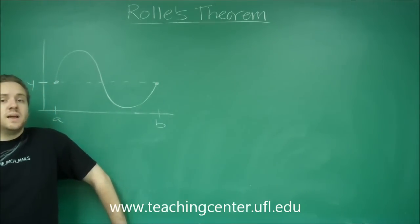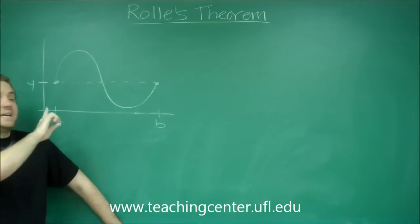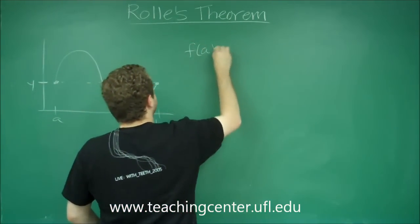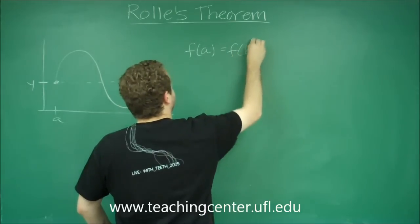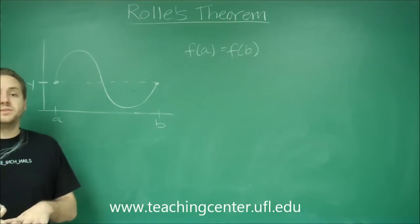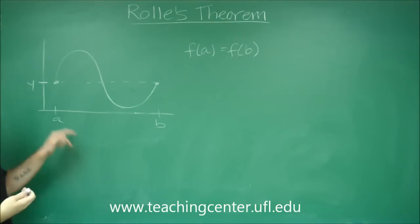So Rolle's Theorem just introduces a third condition. Your function has to be continuous, it has to be differentiable, and f of a has to equal f of b. If so, then you can probably guess what this is going to guarantee. Similar to the mean value theorem, you're guaranteed that somewhere on this graph,